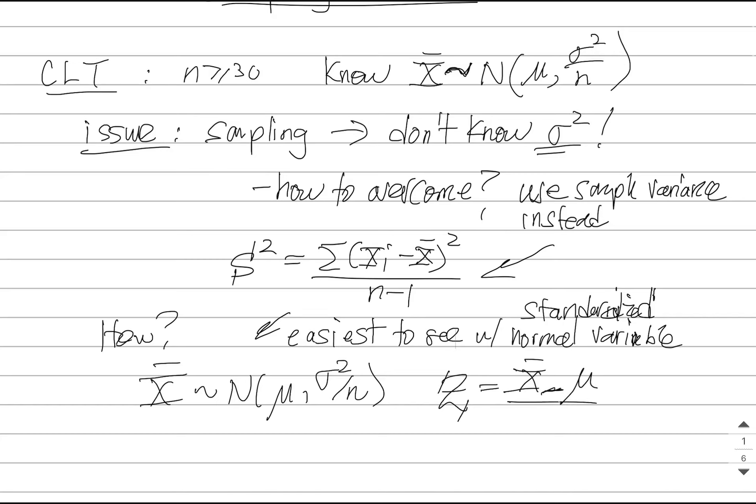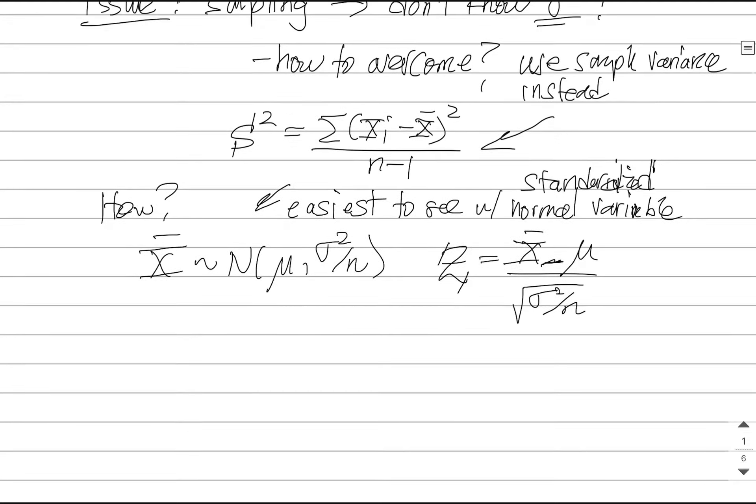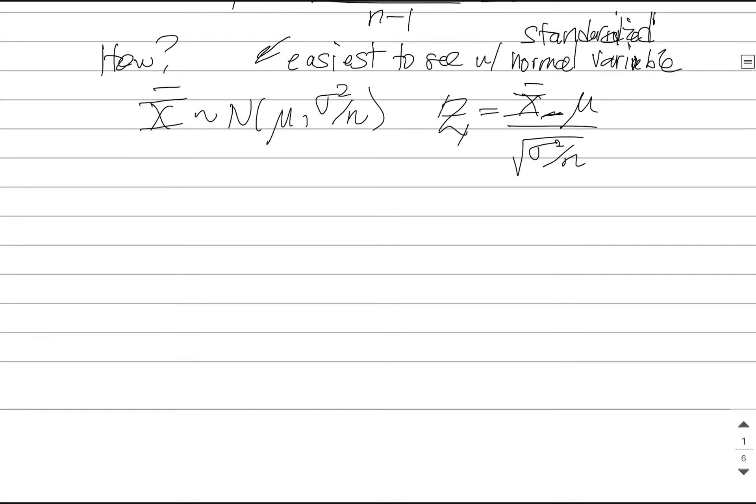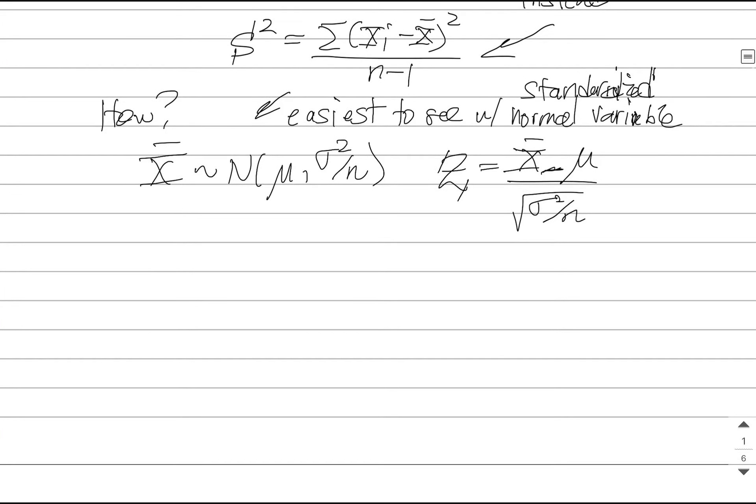x minus mu over sigma squared over n, we can't use this sigma squared. So instead, we are going to replace it with the sample average. So the normalized variable or the standardized variable was going to be x minus mu over s squared divided by root n. So I'm going to write this as follows.